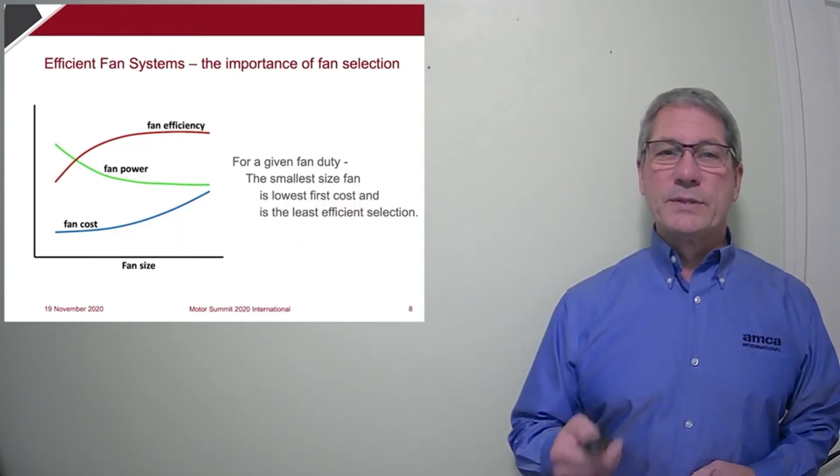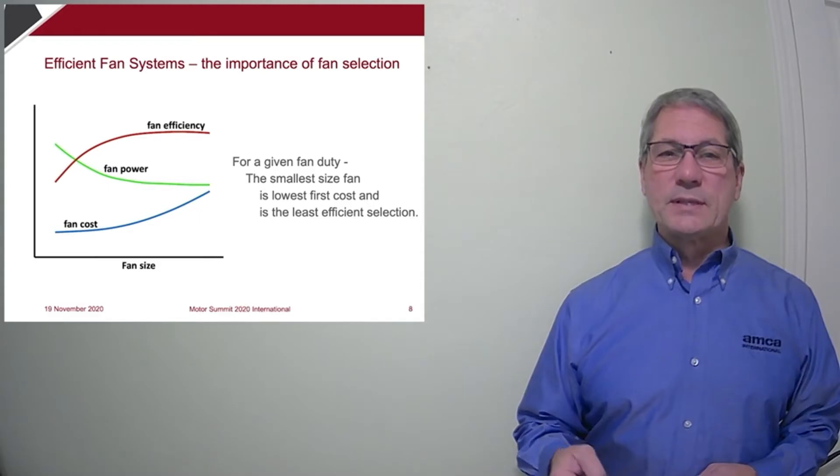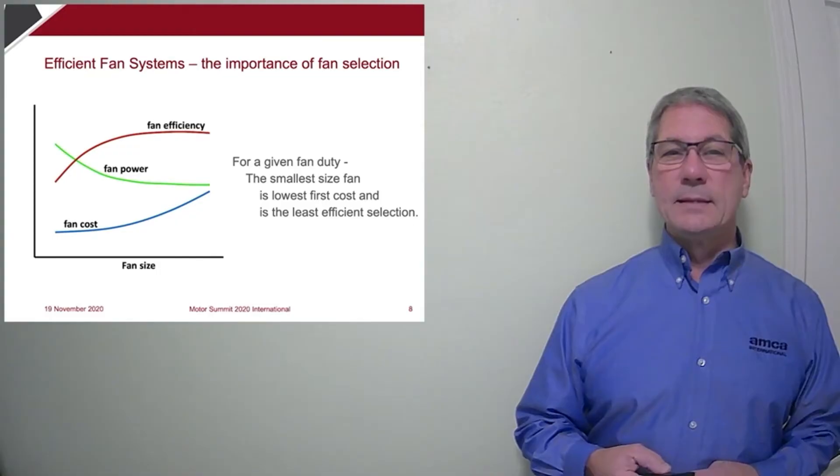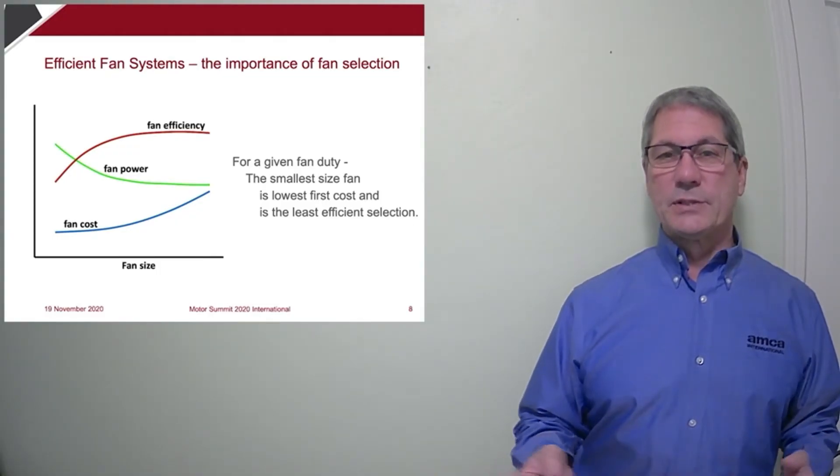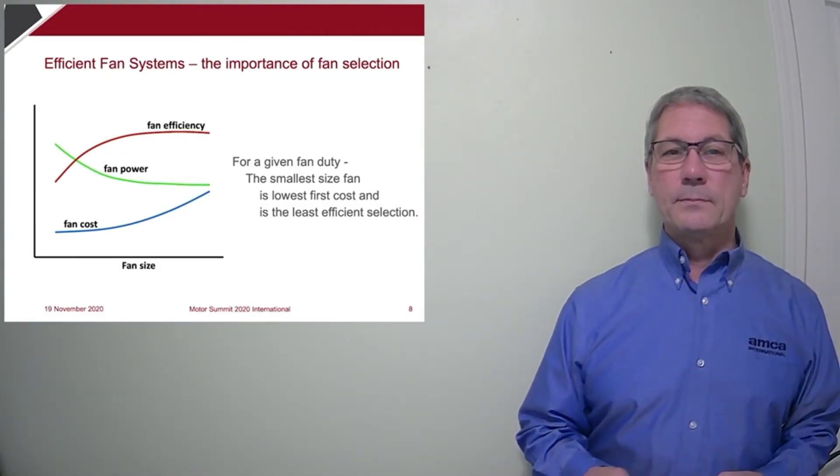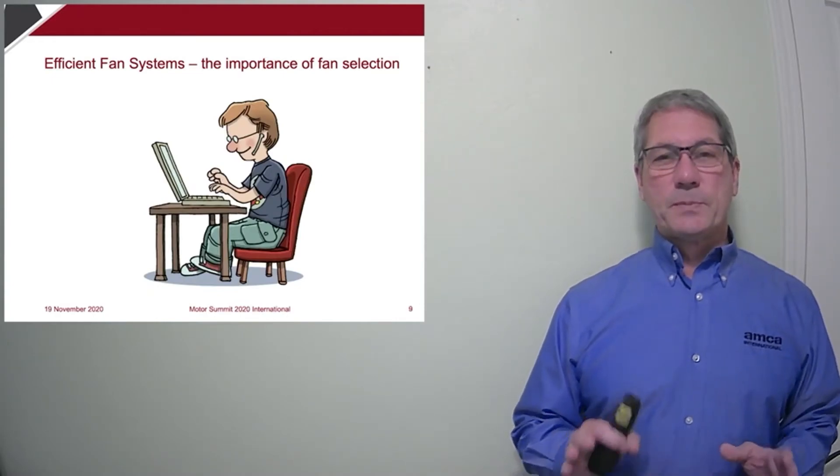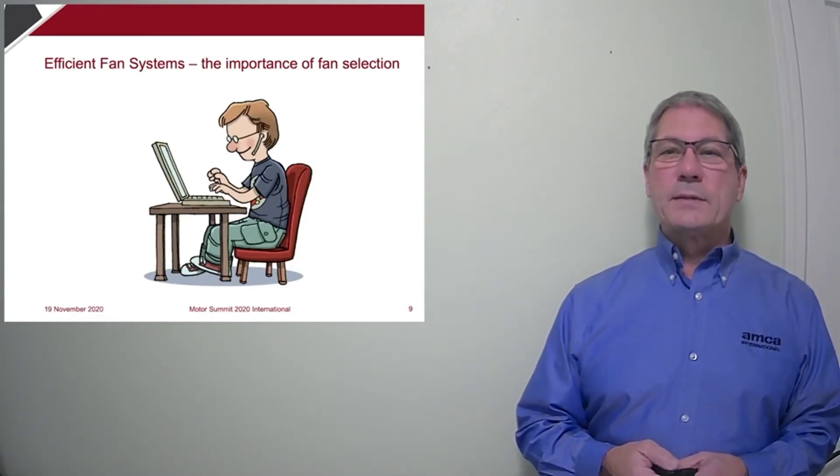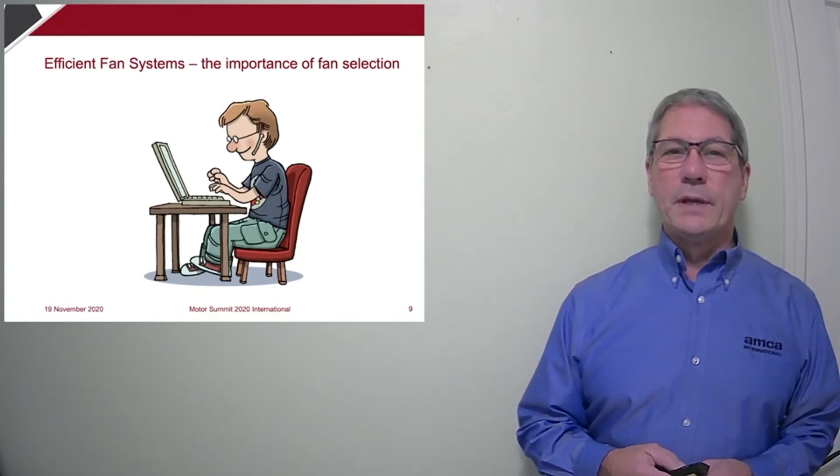So here's the same concept shown in just a simpler way. For a given fan duty, the smallest size fan is the lowest first cost and is the least efficient selection. So we chose to focus on this person, the engineer making the fan selections. He's ultimately responsible for weighing the first cost versus energy consumption of the fan.